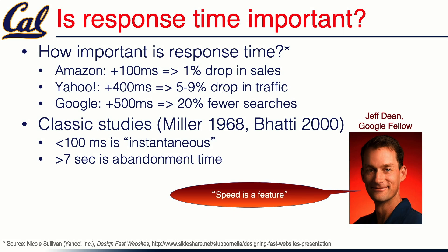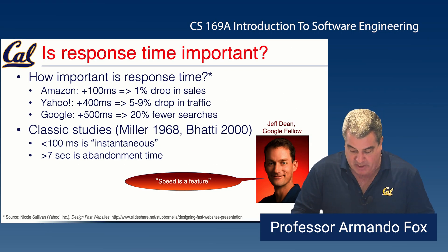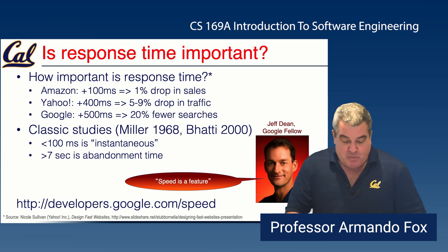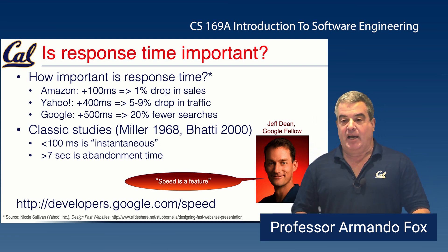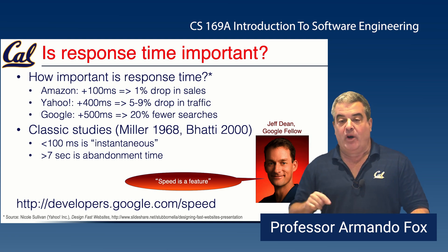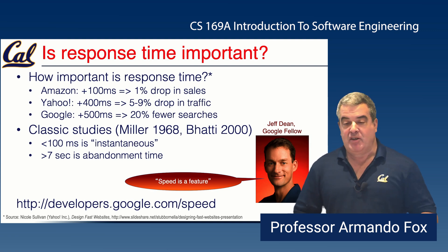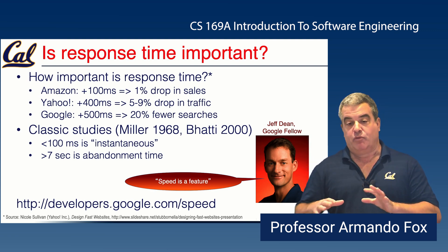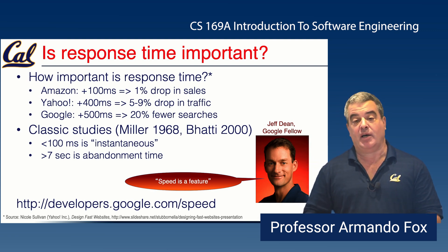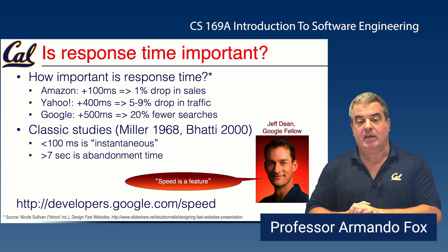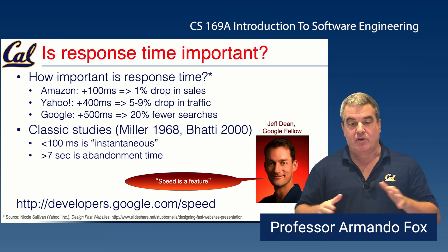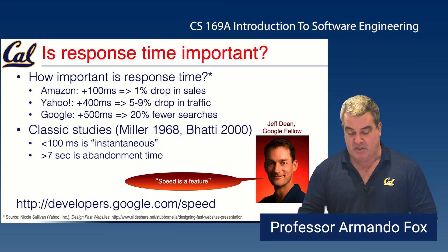Jeff Dean, a Google Fellow who's often at the bottom of interesting things in Google software, coined the phrase 'speed is a feature.' I highly encourage you to look at the speed pages on Google's developer site — they have a lot of tools you can use to analyze where delays might be coming from on your pages. Once you've ruled out the server as the cause, they have suggestions about page design that improve how the page renders and its perceived responsiveness.